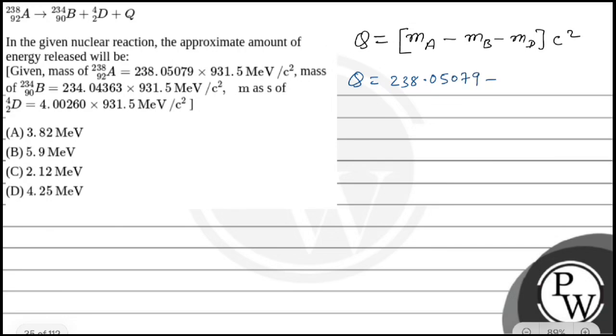Minus mass of B, and obviously multiply by 931.5. This is the value, so we can do it here. Mass of B is 234.04363, and mass of D is 4.00260, multiplied by 931.5 mega electron volt per C square. And finally, we multiply. C square, C square cancels out.